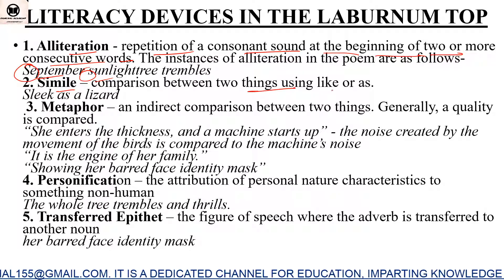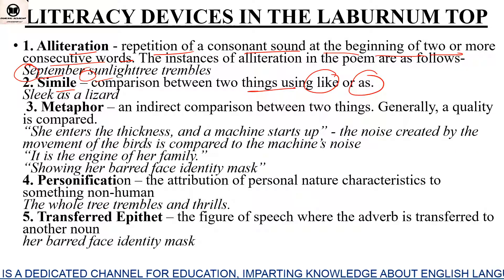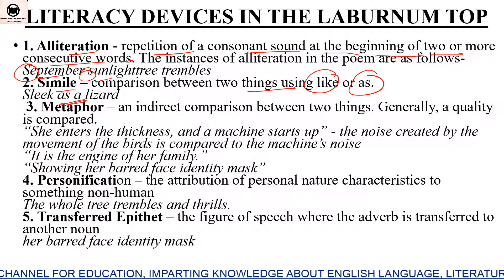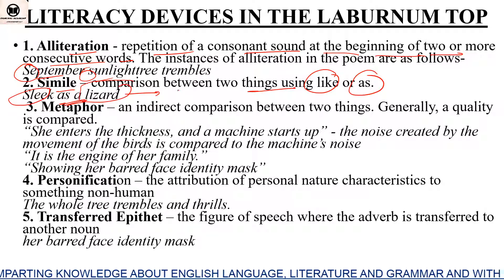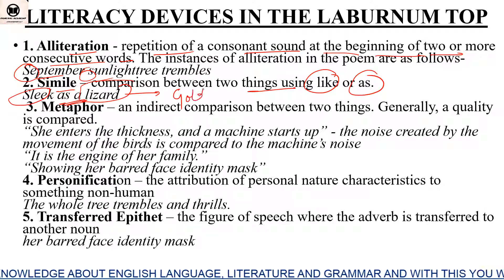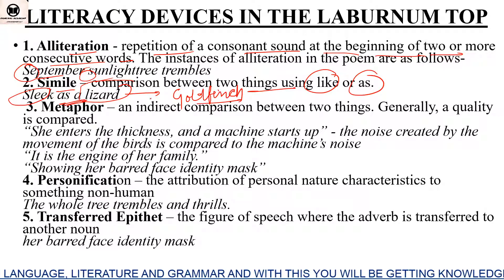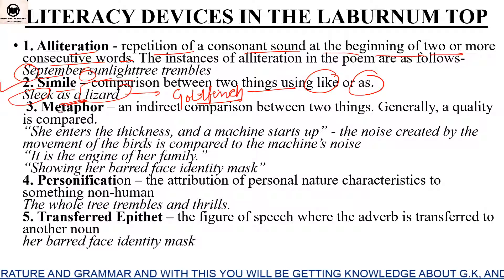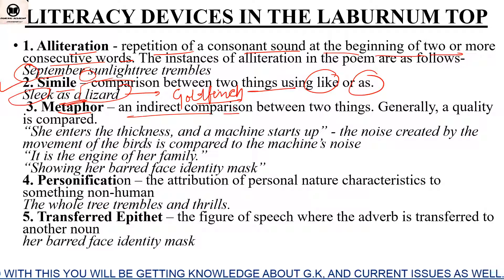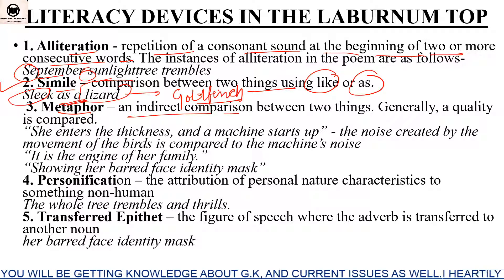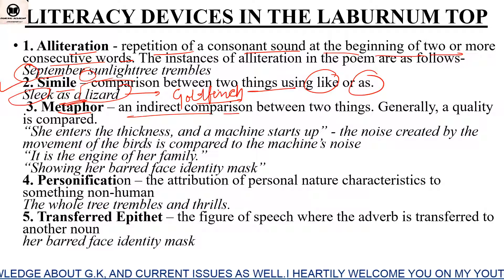The second literary device is simile. Simile means two things are compared using 'like' or 'as'. For example, 'slick as a lizard' — the bird's quality of being rapid is compared to a lizard using 'as'. Here the lizard is being compared with the goldfinch, so this is a simile. The third device is metaphor — an indirect comparison. The difference between simile and metaphor is that simile uses 'like' and 'as', but metaphor does not.